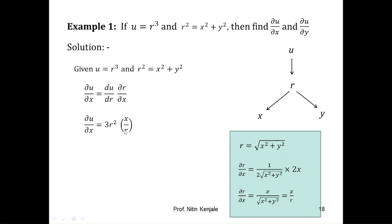Simplifying: r² and r cancel to give ∂u/∂x = 3xr. Similarly, one can find ∂u/∂y = 3yr.